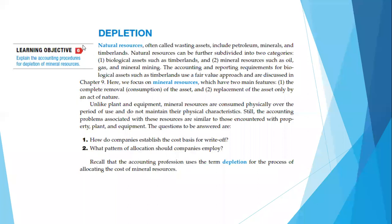Depletion often called wasting assets include petroleum, mineral, and timberlands. Natural resource can be further subdivided into two categories: yang pertama adalah biological assets, misalnya timberland, dan yang kedua adalah mineral resource, misalnya oil, gas, and mineral mining. Secara akuntansi dan pelaporan, biological assets seperti timberland menggunakan pendekatan fair value, sedangkan di dalam depletion ini fokusnya pada mineral resource.